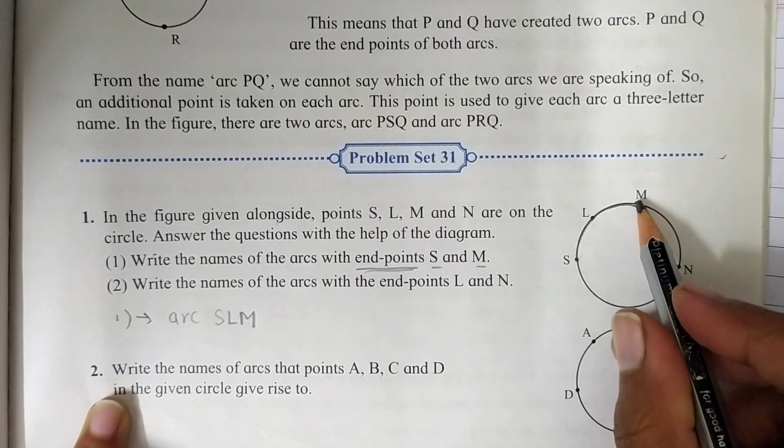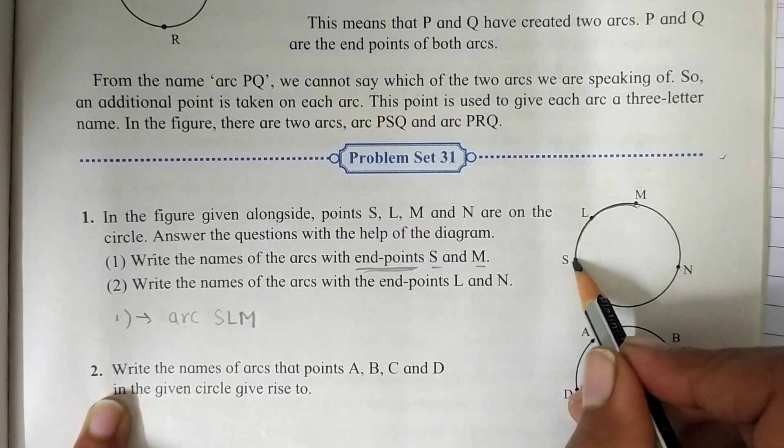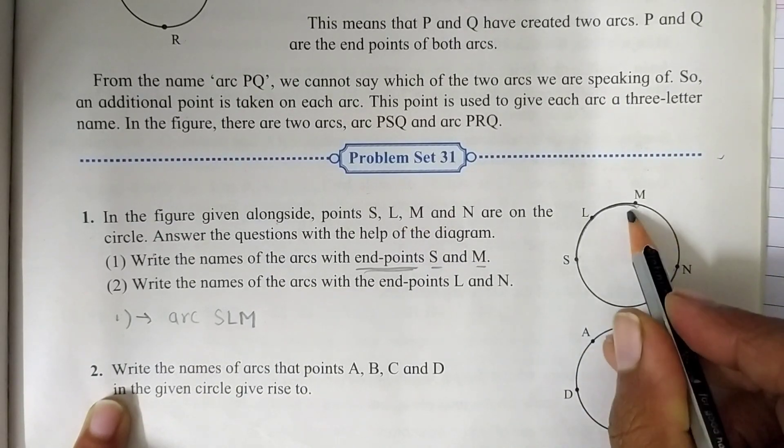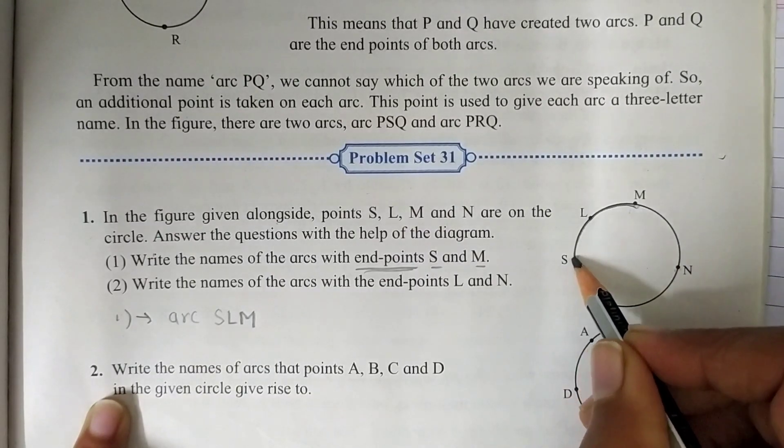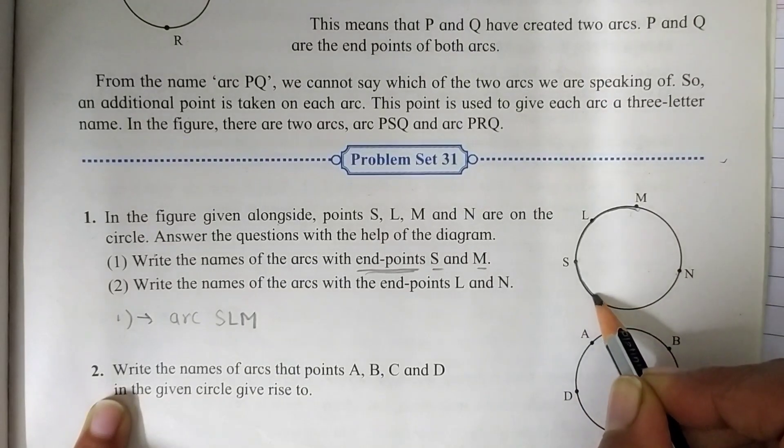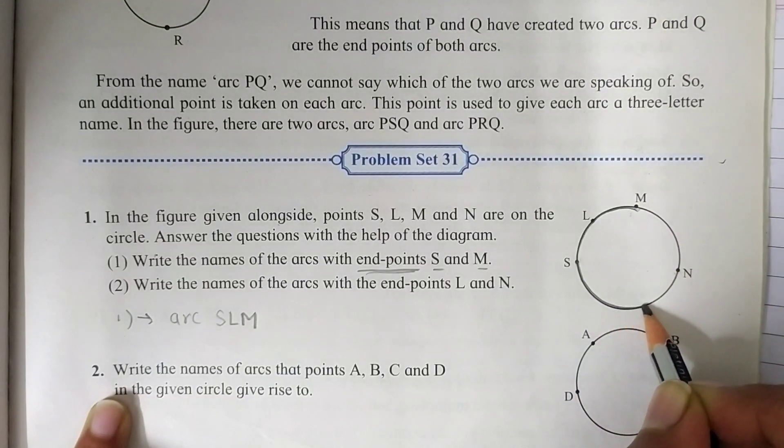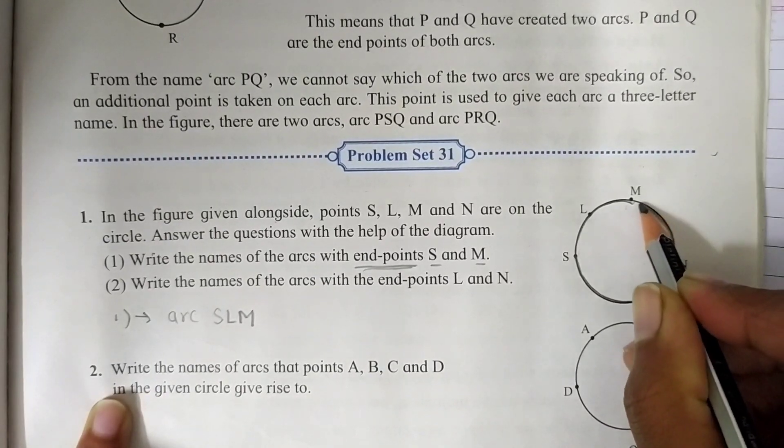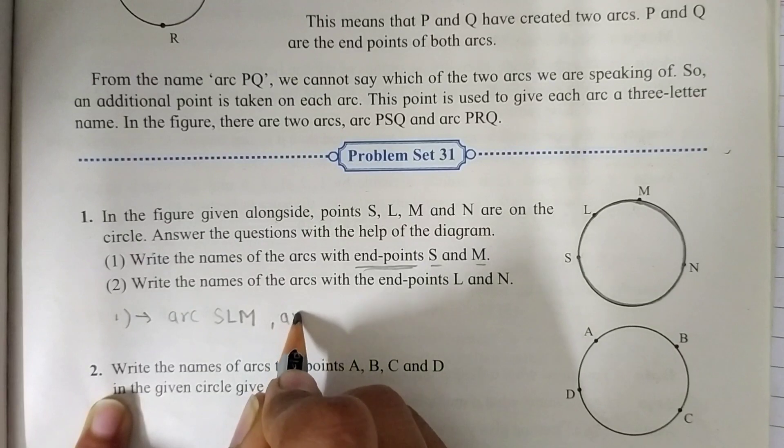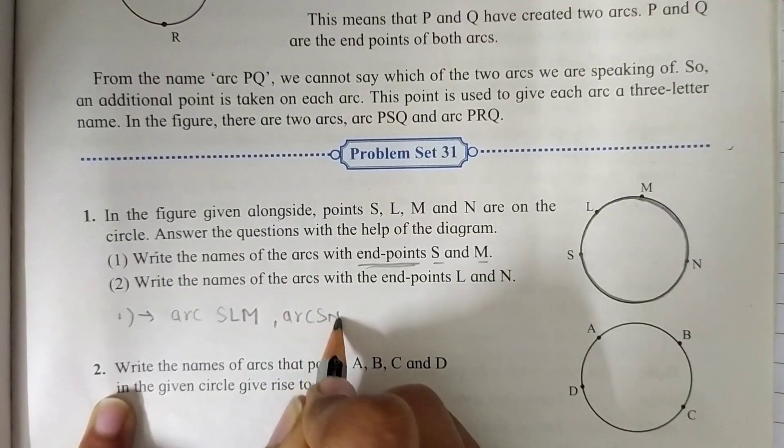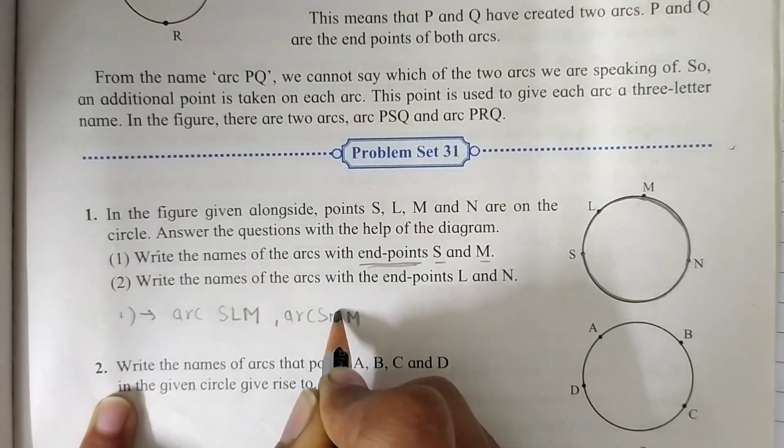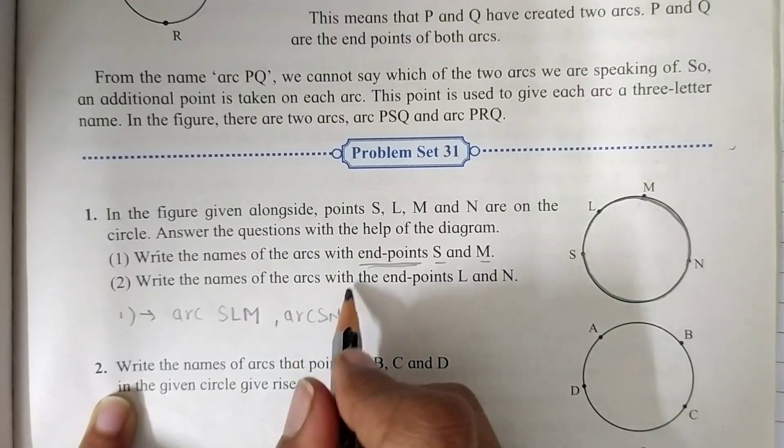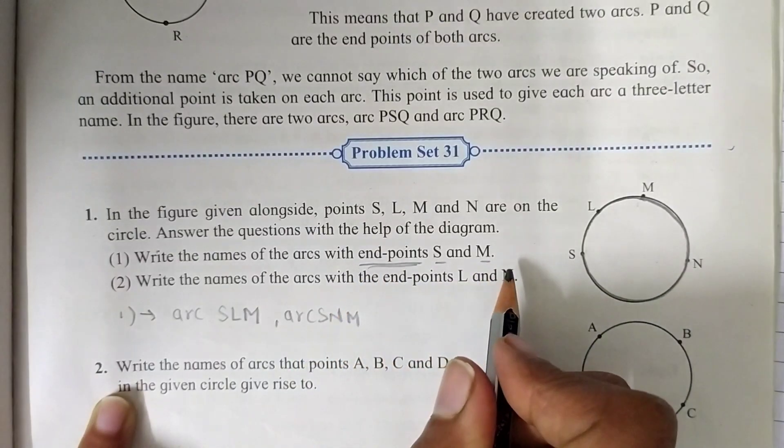Then we have to take care of our end points that are S and M. The second arc is S, N and M. You can see this big arc. These two arcs have end points S and M.